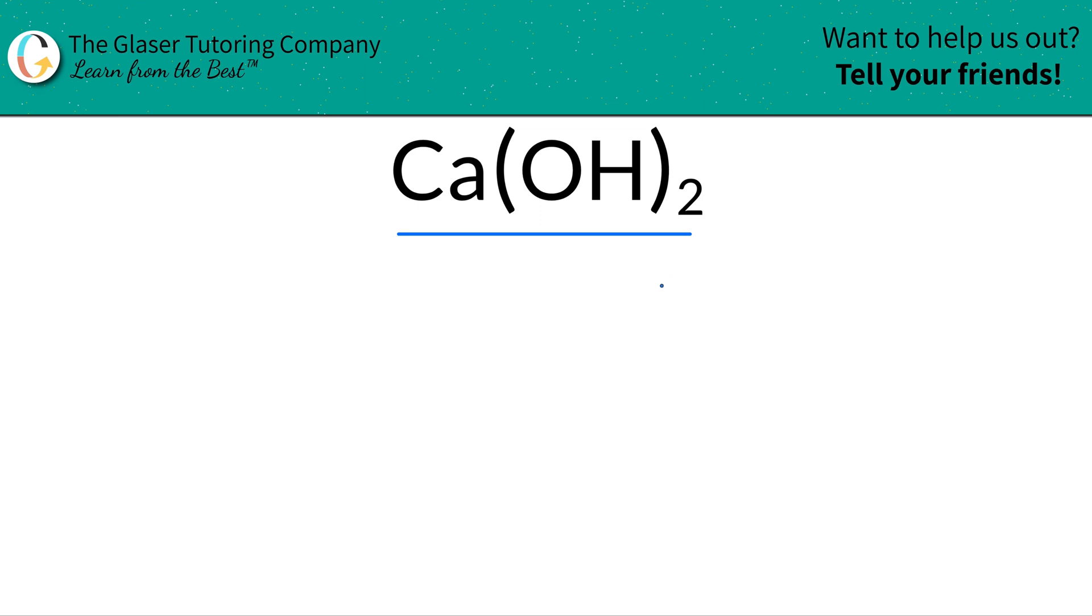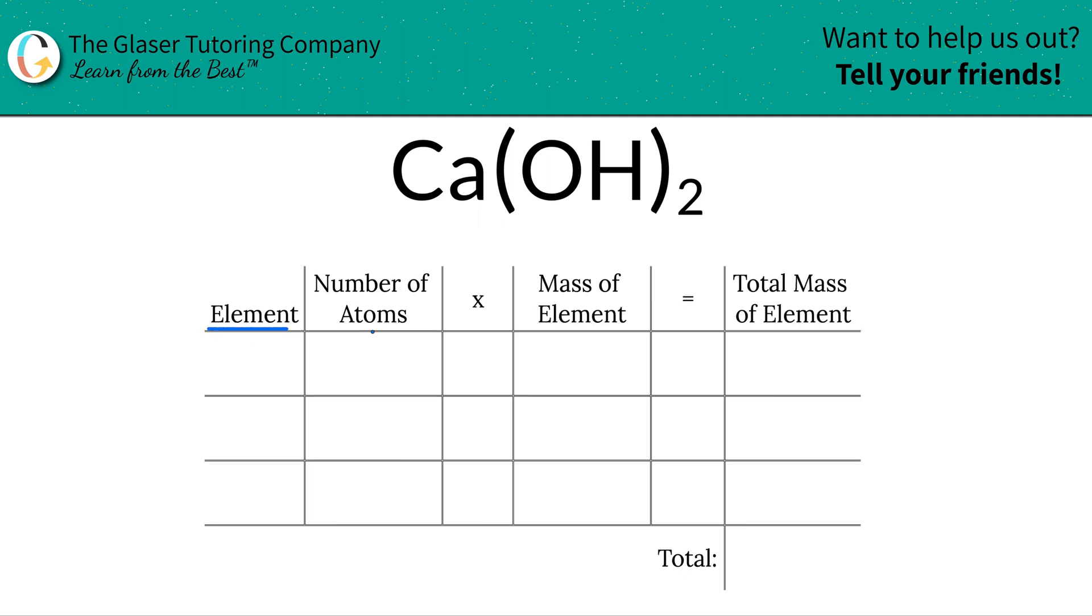Let's use this table to help us organize our thoughts. And the first step, remember, is to find the mass of the total compound. So the first thing is we're going to identify the elements of the compound. So we have calcium, Ca, we have oxygen, O, and we have hydrogen, H.